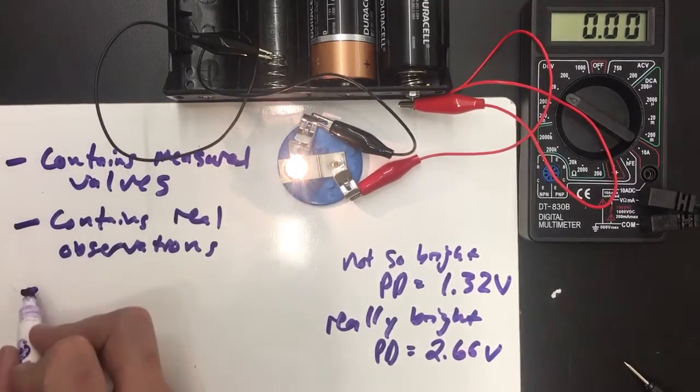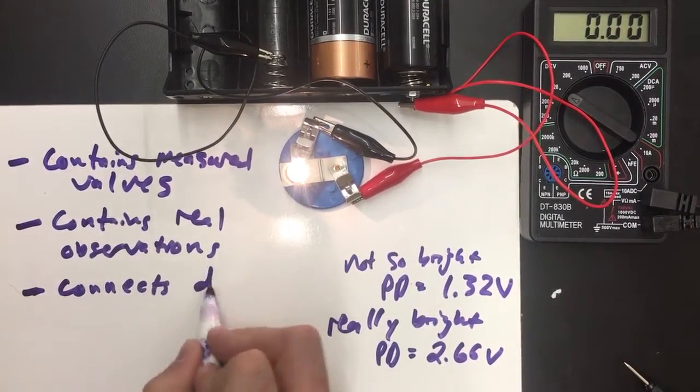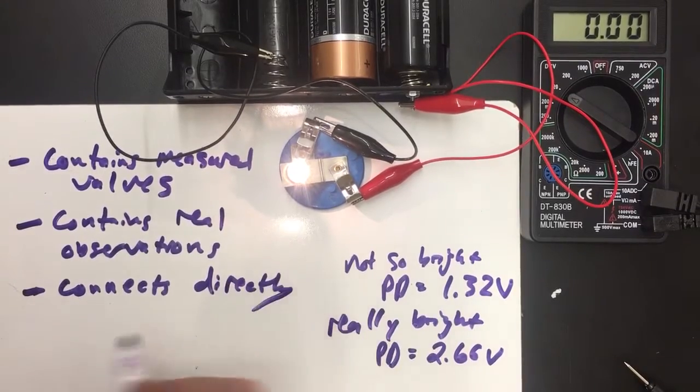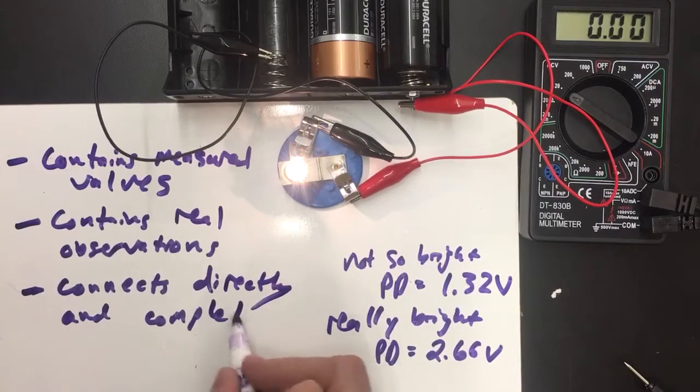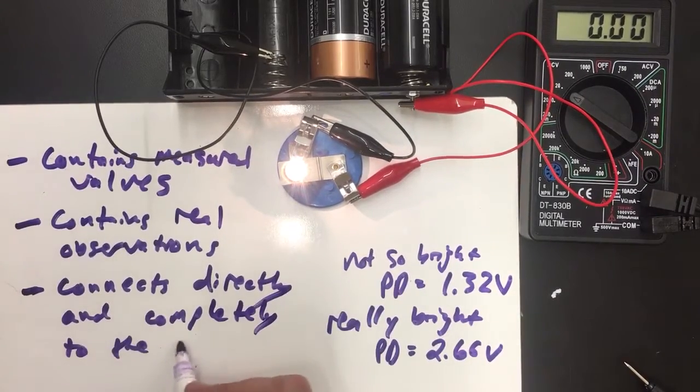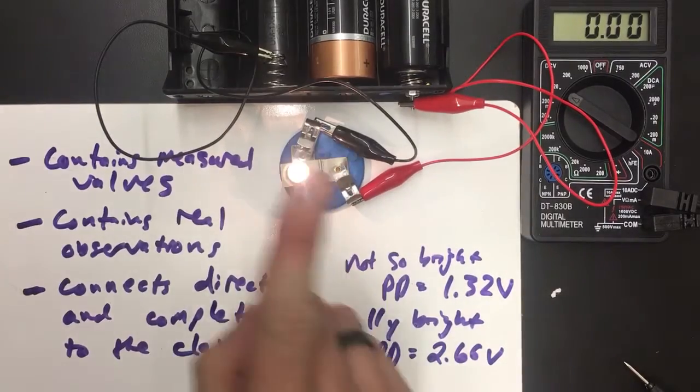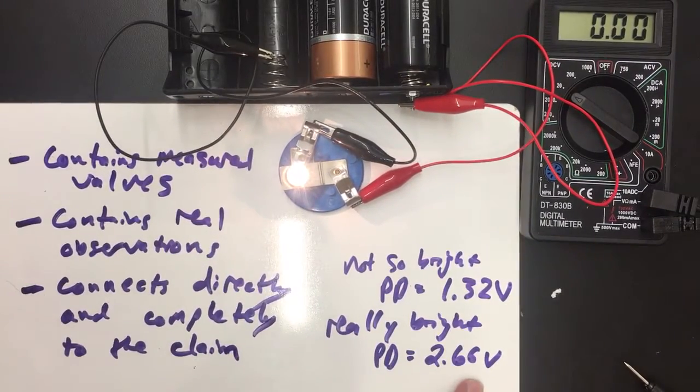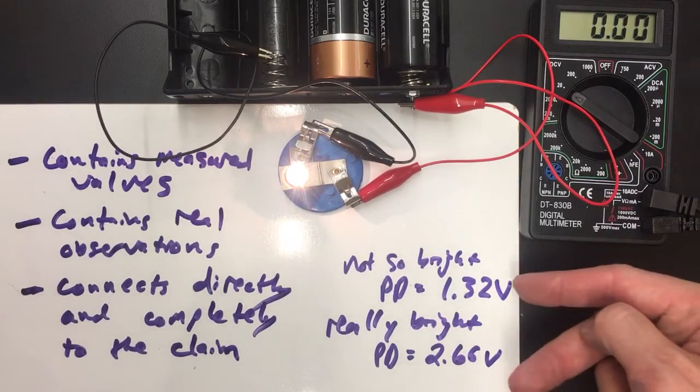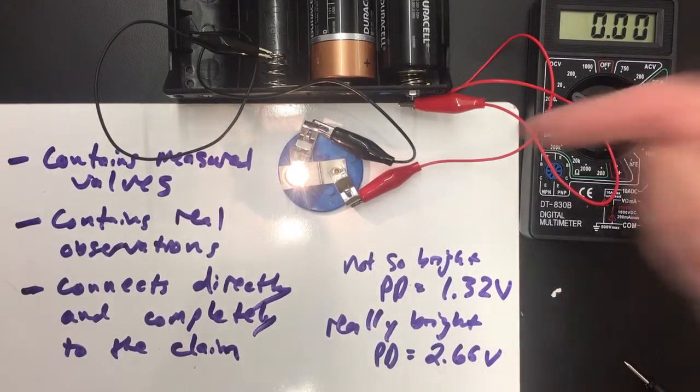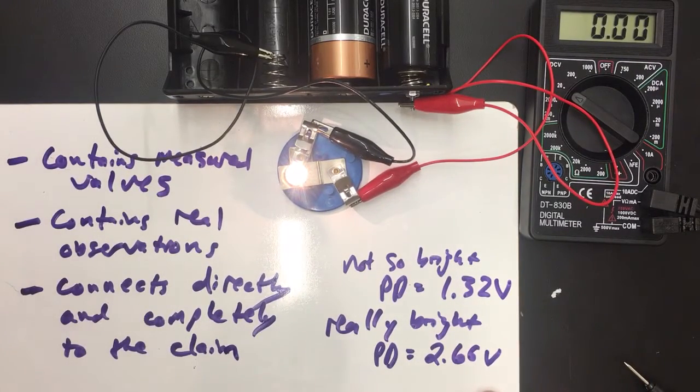And lastly, this evidence connects directly and completely to the claim. That is, I haven't just shown one bright bulb and said, oh look, the pressure difference across it is really bright. I've shown two different bulbs. One of them is not bright and has a low pressure difference. One of them is really bright and has a higher pressure difference.